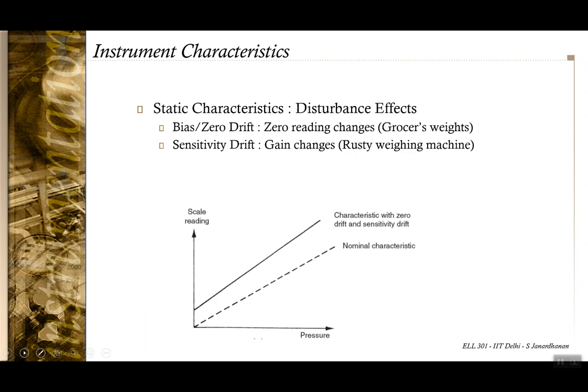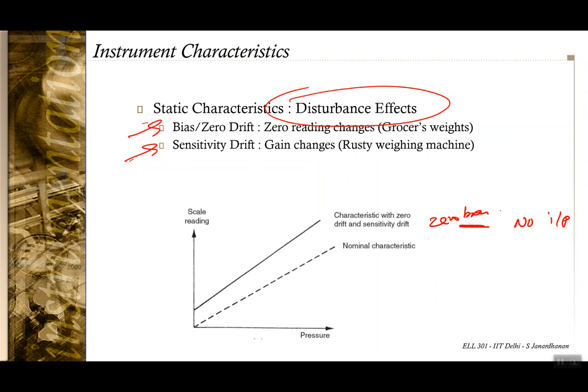Zero bias is the reading indicated when there is no input. Sensitivity drift occurs when the reading or sensitivity changes from the value the instrument was designed or calibrated for. These characterize how disturbances or other effects can affect the reading of the instrument.